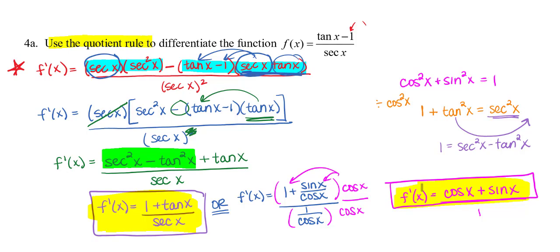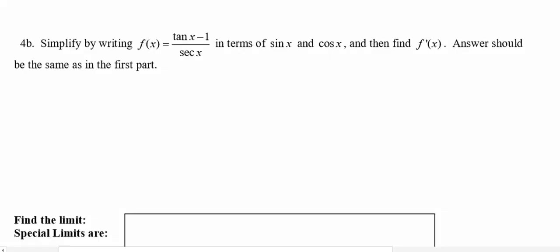Let's take a look at the directions for the next question. Simplify by writing, it's the same function we had in the previous problem, f(x) equals tangent x minus 1 over secant x, in terms of sine x and cosine x first. So simplify this first and then find your derivative. Let's do a rewrite here. I like to label my rewrite so I know I'm not finding the derivative.